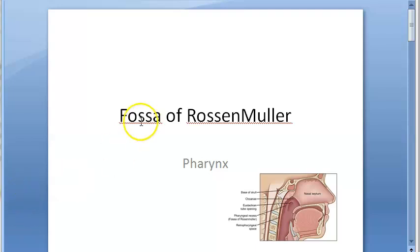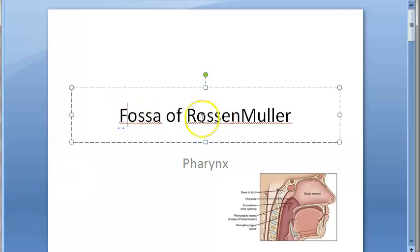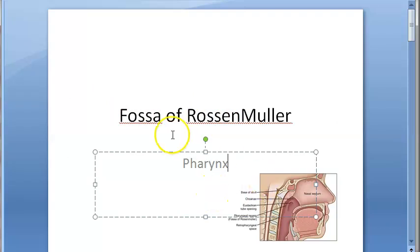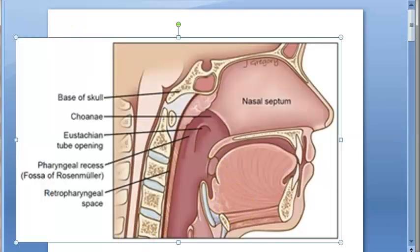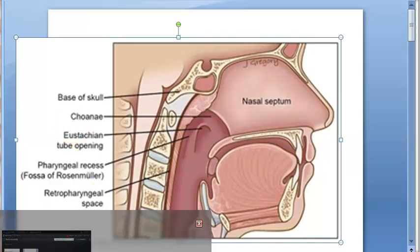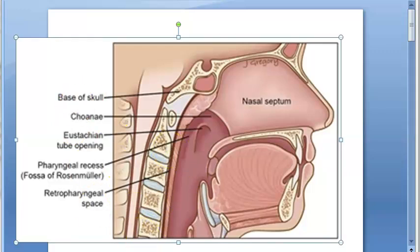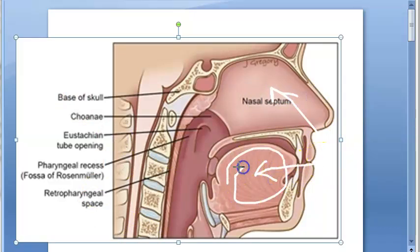Hello people, in this video let us look at the fossa of Rosenmüller. So basically this is an anatomy part, and we will look at where the fossa of Rosenmüller is. First of all, this is the nose, this is the mouth, what you are seeing is the tongue, so what will this be? This will be the pharynx.